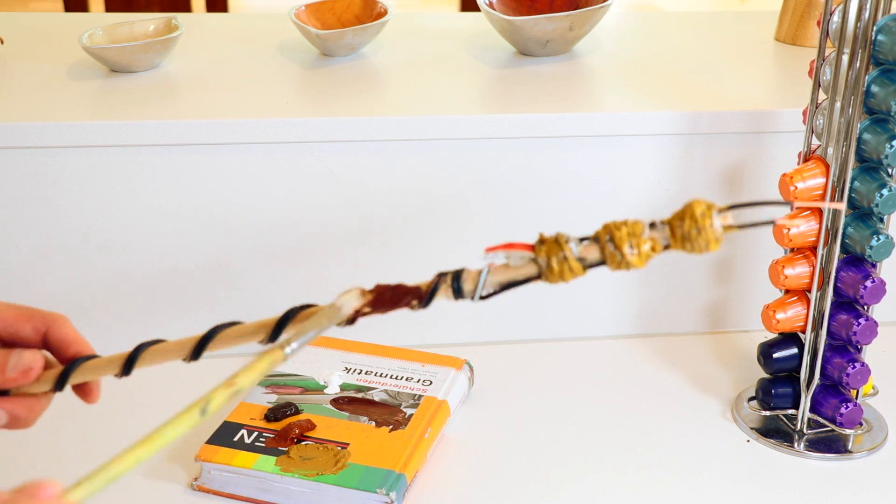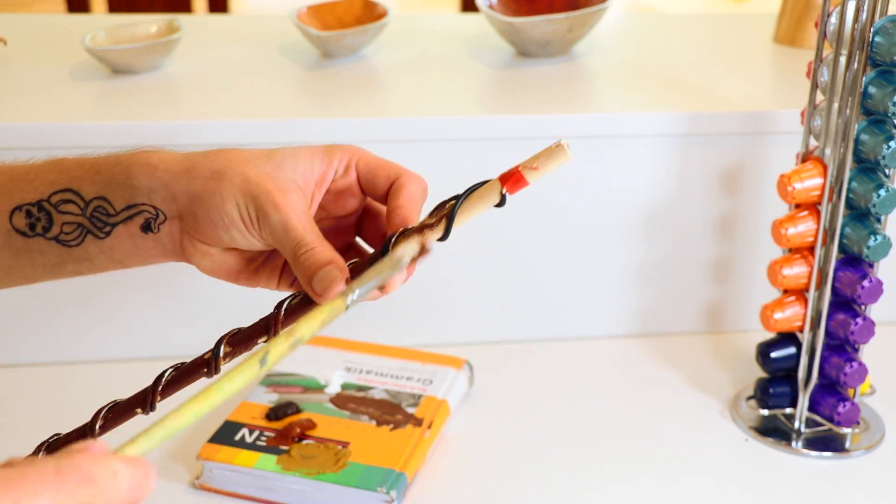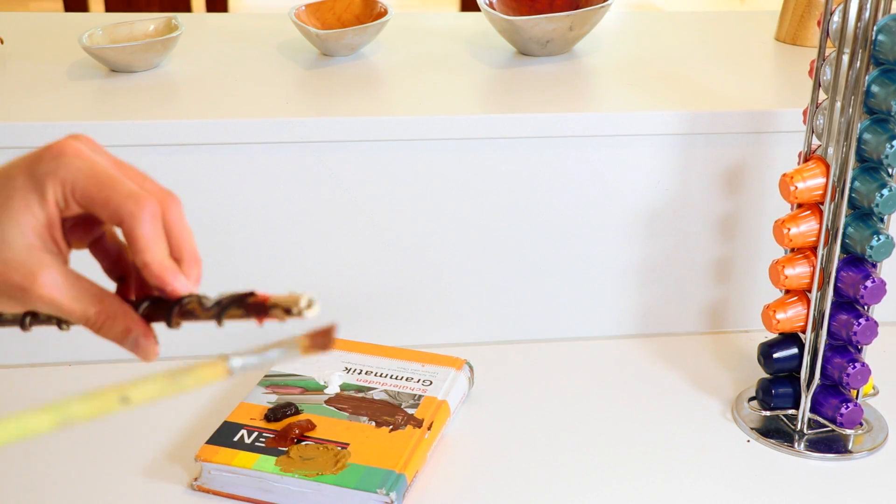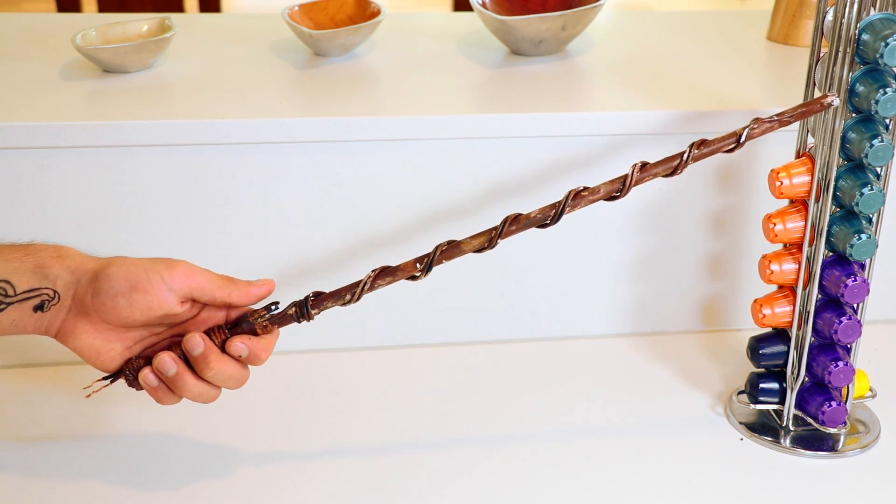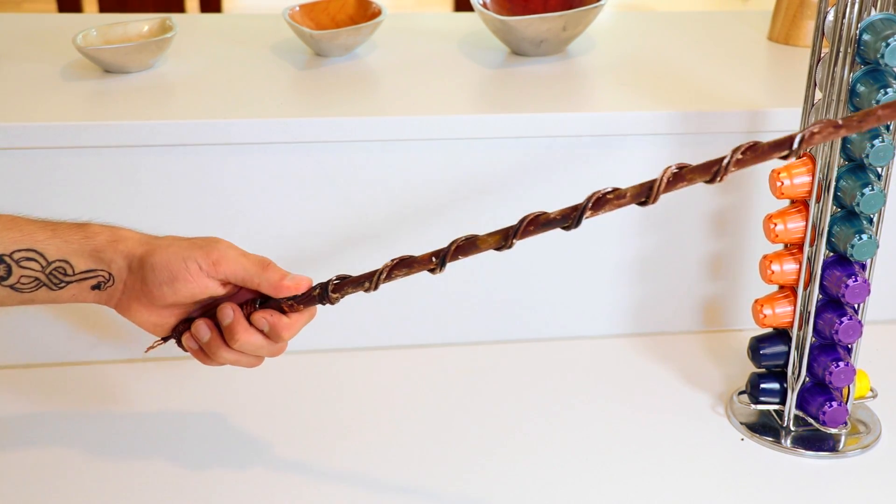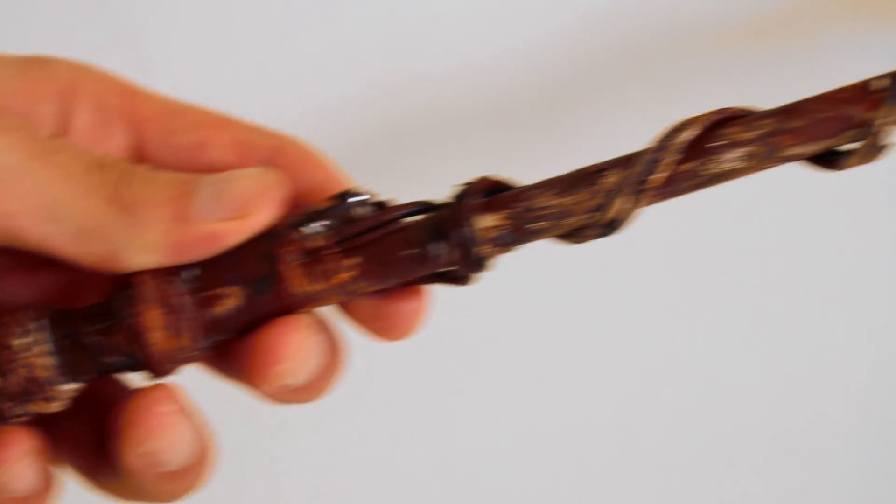I decided to use some different shades of brown and mix some white to create this wand. Make sure you don't cover the aluminum or the copper with the paint.